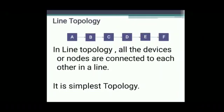First is line topology. In every topology, the meaning is in the name itself. In line topology, computers A, B, C, D, E, and F are connected in a line. The connection structure, the connection topology, is in a line structure. That is why it is called line topology. All the devices or nodes are connected to each other in a line. It is the very simplest topology.